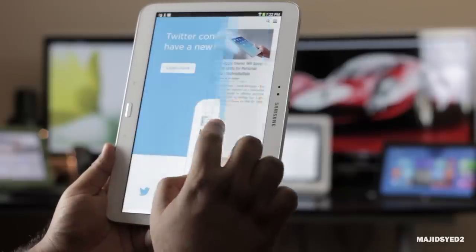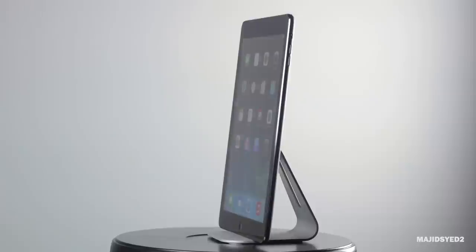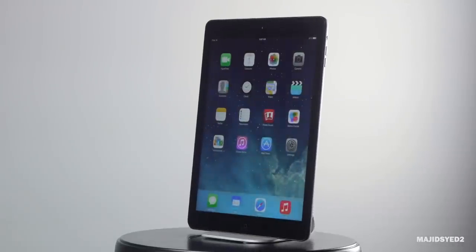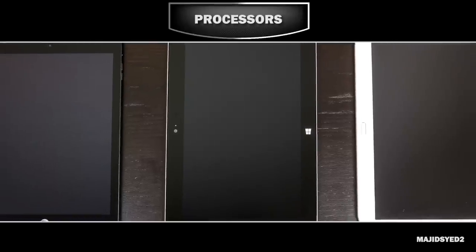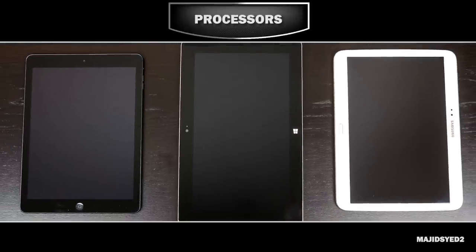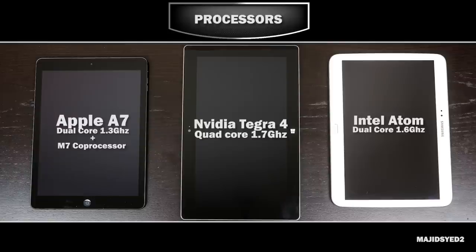Looking at the internal specifications, the iPad Air has the new Apple A7 chip — a dual-core processor clocked at about 1.3 GHz, which is excellent and actually faster than some lower-end quad-core processors. Like the iPhone 5S, the iPad Air also has the M7 coprocessor, which takes load off the main chip to focus on gyroscope, accelerometer, and compass calculations.